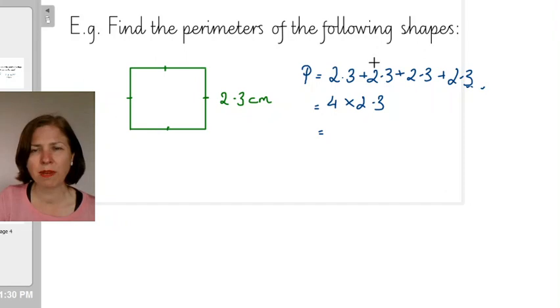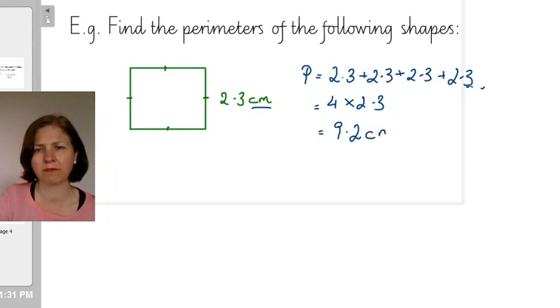Because for these numbers adding is actually pretty straightforward. In fact I might even do that. I'm going to think 2.3 plus 2.3 is going to give me 4.6 here and 4.6 here and then I add those together. So 4.6 plus 4.6 is going to give me 9.2. Check my units it's centimeters.